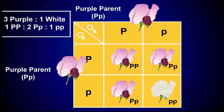A Punnett square not only allows us to visualize the potential offspring from a cross, but also allows us to calculate the probability of obtaining an offspring with a specific phenotype or genotype. Assuming both parents are heterozygous, there is a three-quarter chance that the offspring will have the dominant purple phenotype, and a one-quarter chance that the offspring will be white. Punnett squares are useful for quickly visualizing the results of a single trait or two trait cross.